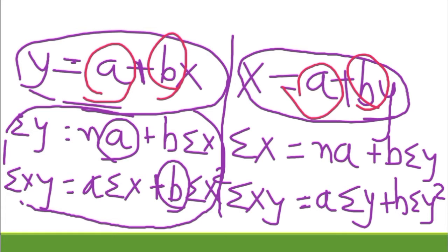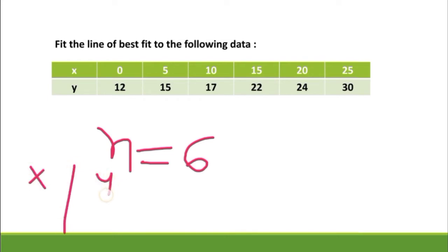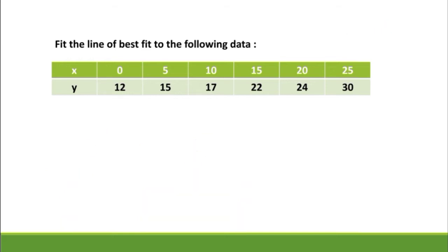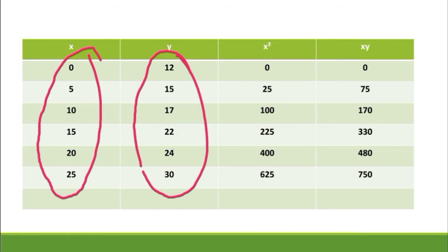Fit the line of best fit to the following data. Here we have six values, so n = 6. The next step is to make a table with four columns: the first column for x, the second for y, the third for x², and the last for xy. The values of x and y are given. To find x²: 0²=0, 5²=25, 10²=100, 15²=225.